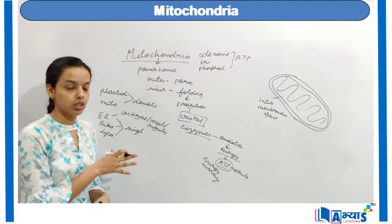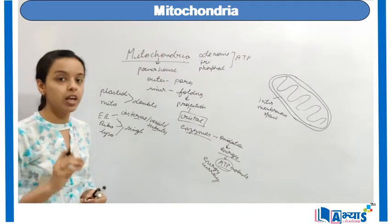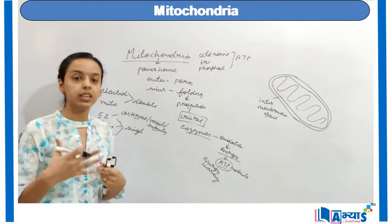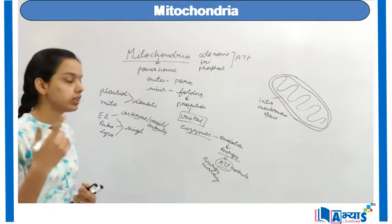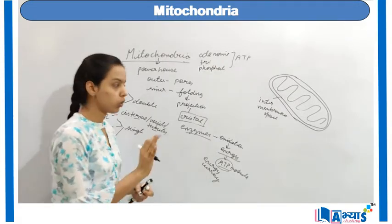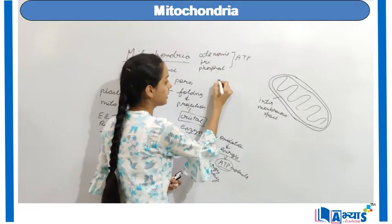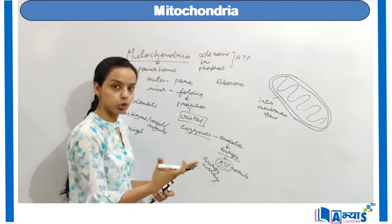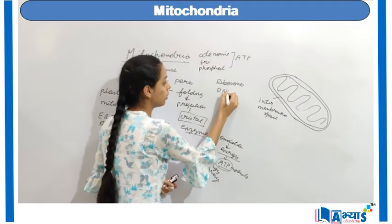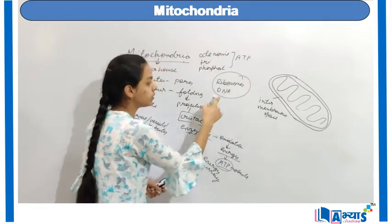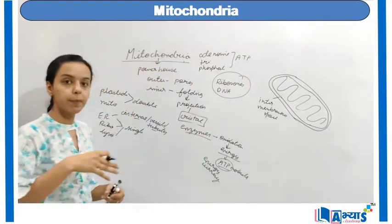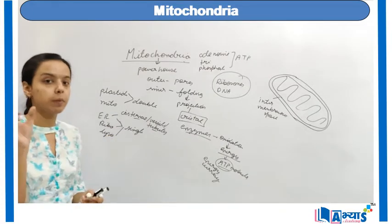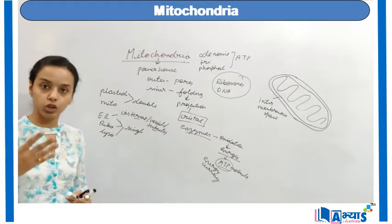Now let us discuss why mitochondria is known as semi-autonomous. The main feature of this organelle is that it produces its own ribosomes and has its own DNA. Ribosomes and DNA are both present inside the mitochondria. The basic function of ribosomes is the manufacture of proteins.